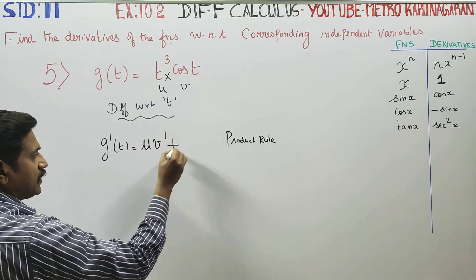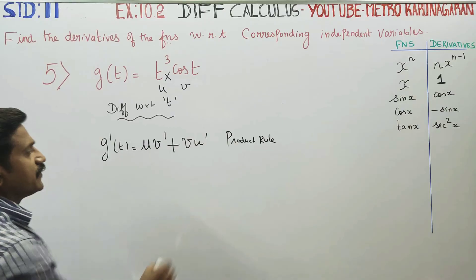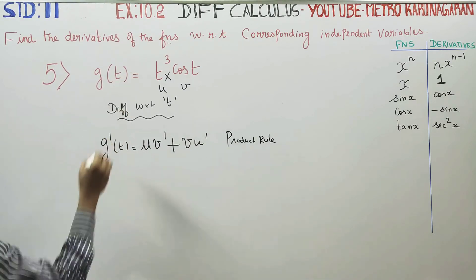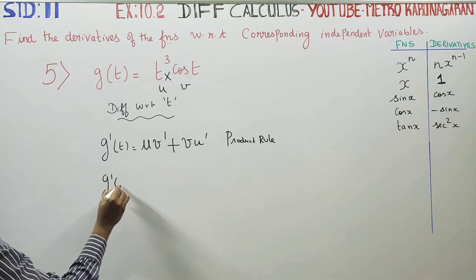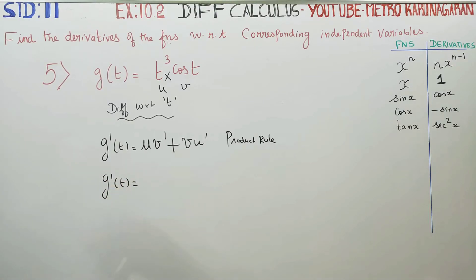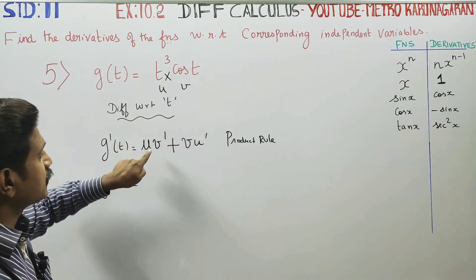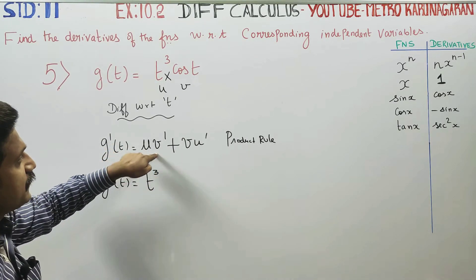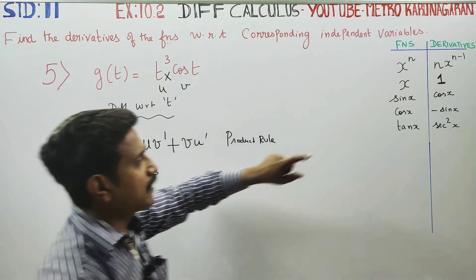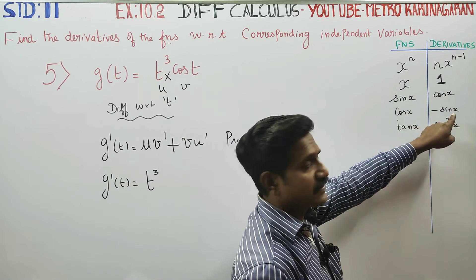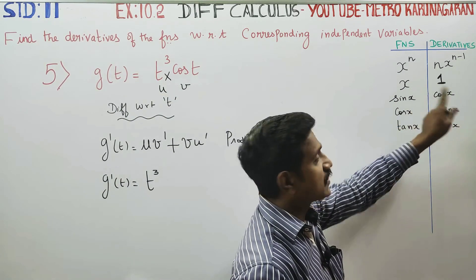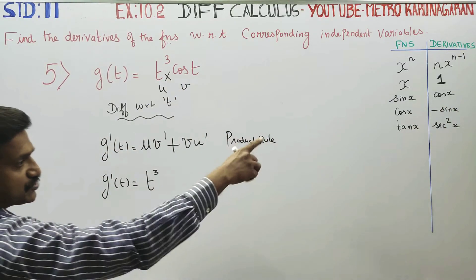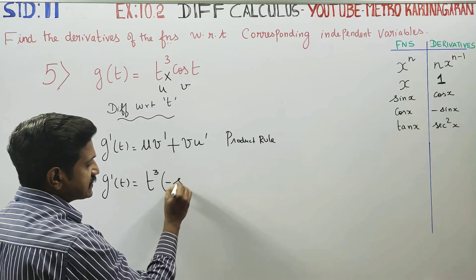g(t) is equal to u. t cube is equal to u. v' cos differentiate — cos differentiate is equal to minus sin. x sum is equal to x, t is equal to t. cos t is equal to u, u gives minus sin t.